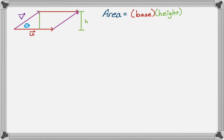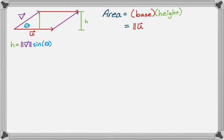Here's our height — from the base all the way up. We can move it over here and now we have a right triangle. In that right triangle, the height h is opposite over hypotenuse, so h equals the magnitude of v times sine of theta. That's just from right triangle trig. So the area is the magnitude of u times the magnitude of v times sine of theta.